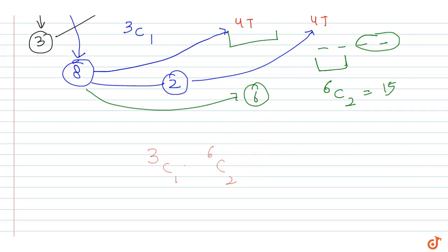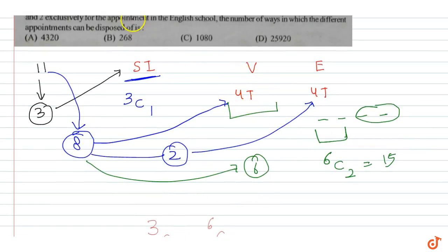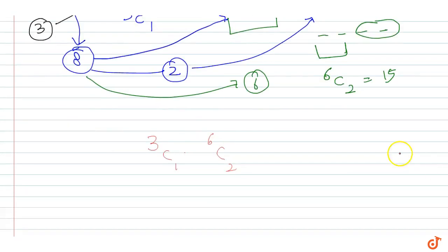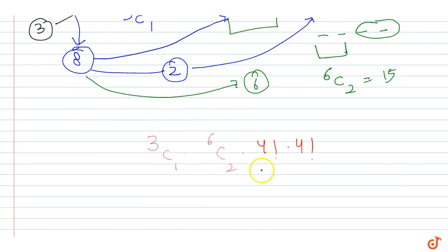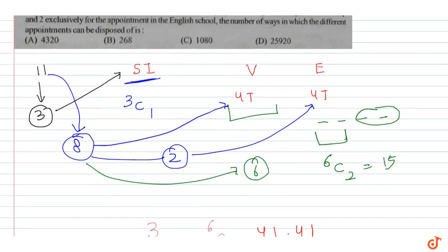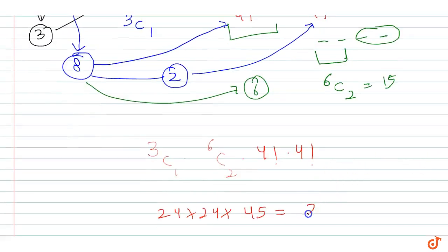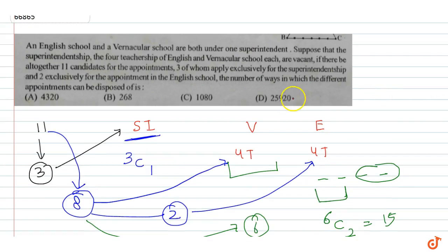Again, we have the teachers selected, but teachers can be rearranged into 4! × 4! ways — we have two schools, each with four factorial arrangements. So the total is: 3 × 15 × 4! × 4! = 3 × 15 × 24 × 24. Four factorial is 24, 24 × 24 = 576, and 3 × 15 = 45, so 45 × 576 = 25,920. The answer is 25,920, which is option D.